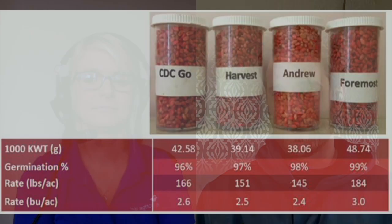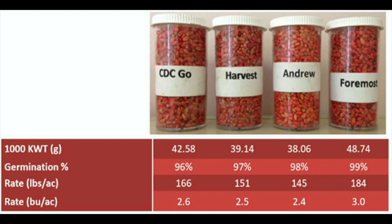I actually came prepared with four different seed lots here: CDC Go, Harvest, Andrew, and Foremost. They all have generally around the same germination, ranging from 96% to 99%. But the biggest range is in their actual thousand kernel weight. Foremost has the biggest seeds of this lot, at around 48 grams per thousand kernel weight, while Andrew is around 38 grams per thousand kernel weight. So if you're putting both in the ground at two or two and a half bushels per acre, there's a big difference in the actual amount of seed going in the ground.